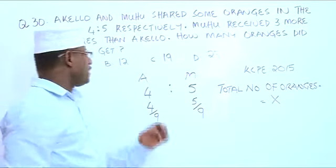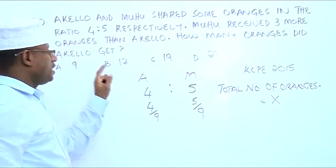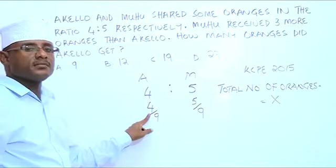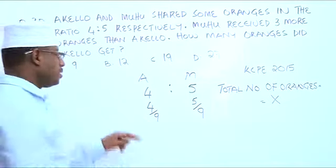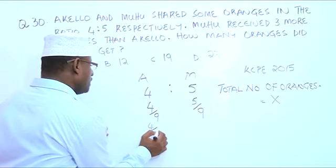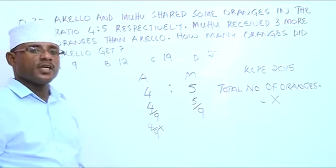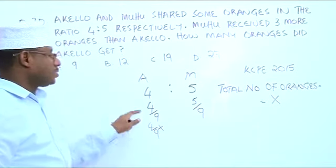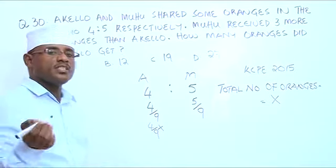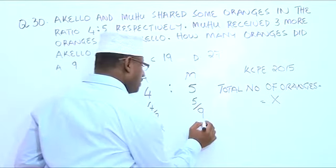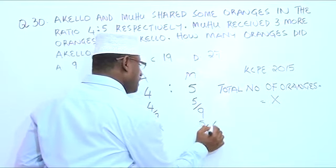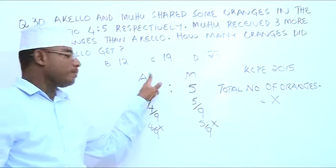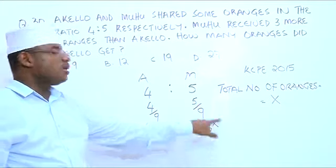If you want to find out how many oranges Akelo got, it will be his fraction — which is 4 over 9 — multiplied by the total number of oranges X, giving 4 over 9 X. For Muhu, the fraction is 5 over 9 multiplied by the total number of oranges X, giving 5 over 9 X.